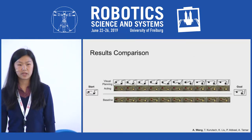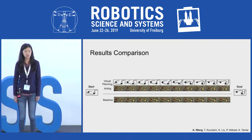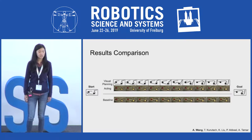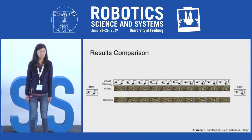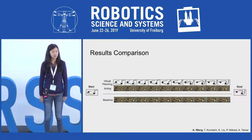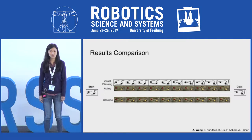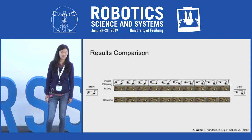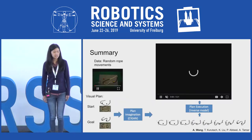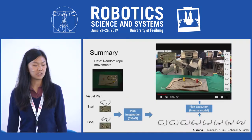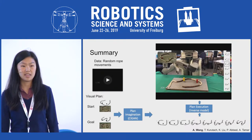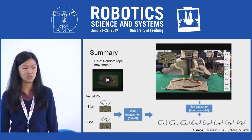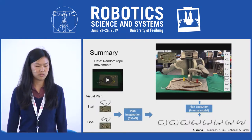Comparing against the baseline of running the inverse model directly on the goal image, our visual plan shows the robot what it is going to do. The robot successfully follows the plan, while the baseline fails because the inverse model alone cannot do the forward thinking needed to plan and move the rope around the obstacles. In summary, data is collected from random rope movements; the Causal InfoGAN generates the visual plan, and running the inverse model allows the robot to follow that plan and move the rope into the goal state.